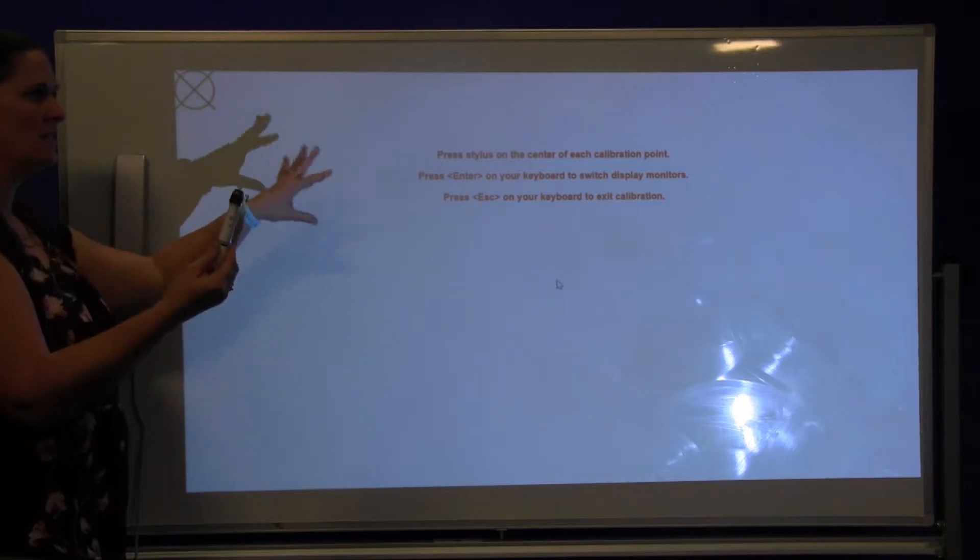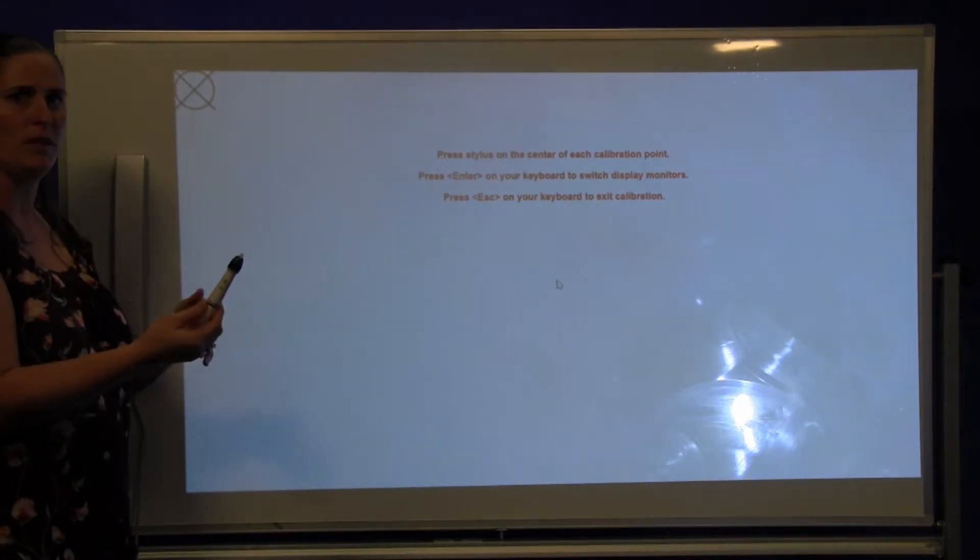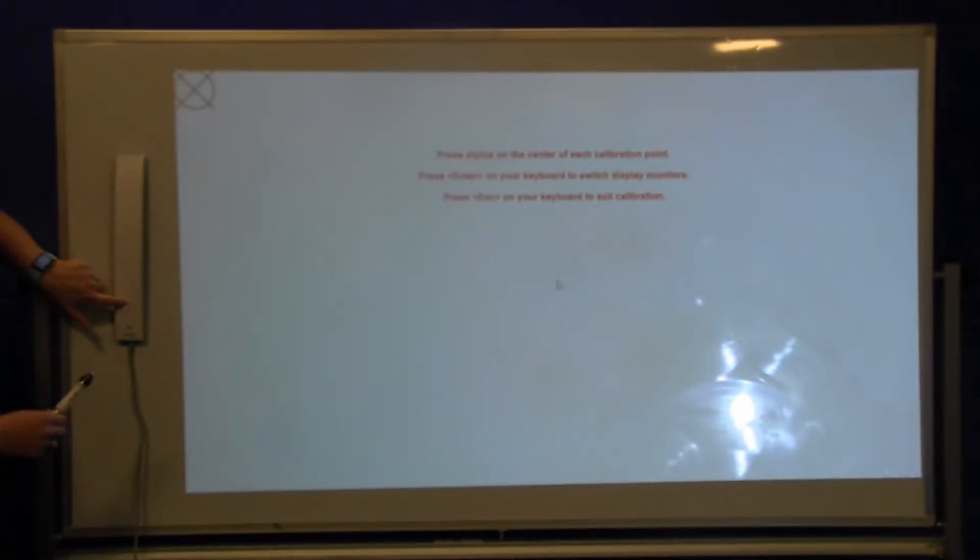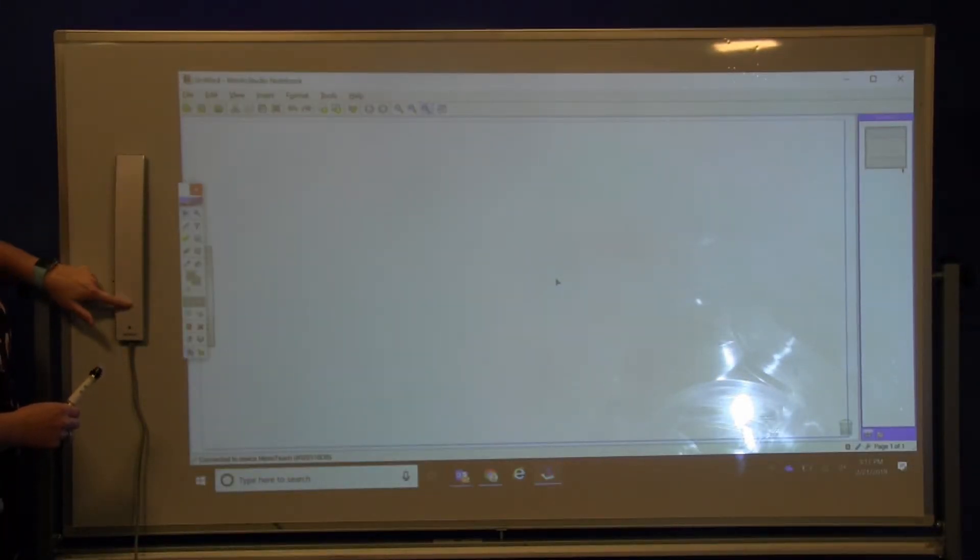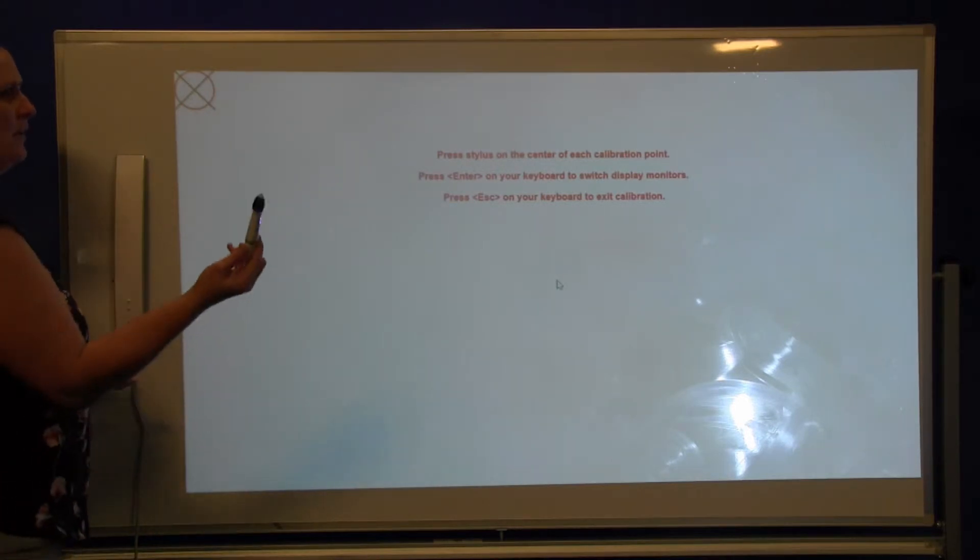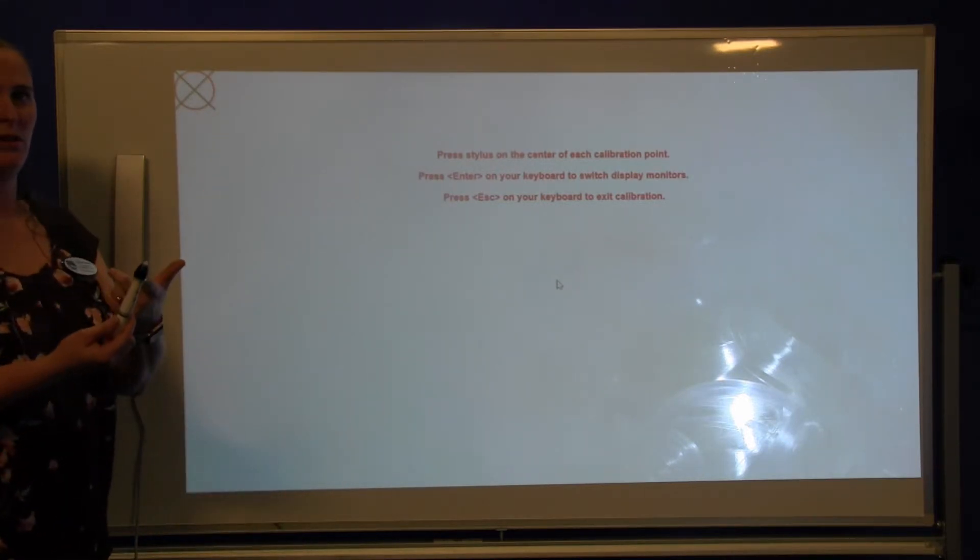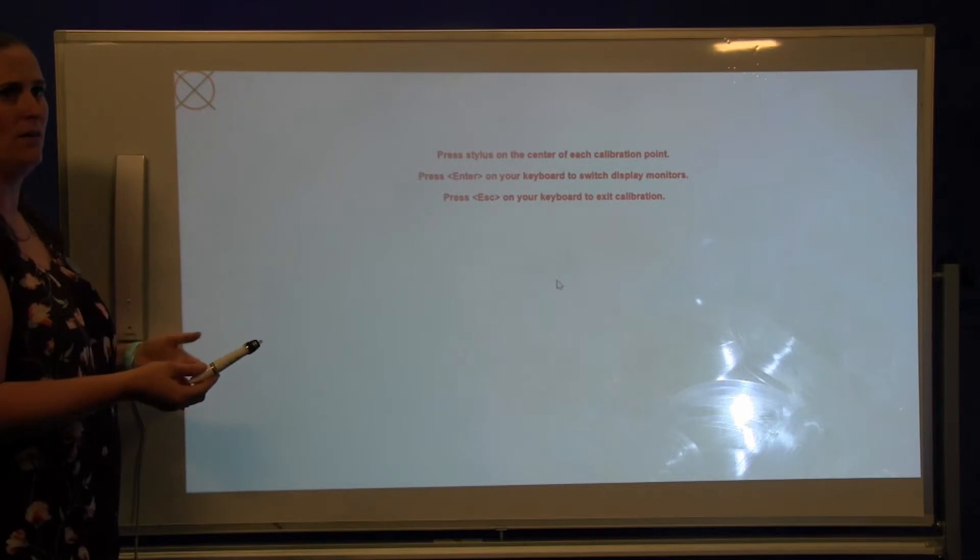Then you're going to take your pen, and if it doesn't already say calibration, there's a couple different ways to start the calibration. You can either hit the bottom button, you can hit the crosshairs button on the Mimeo bar, and it's going to bring it back up for you. Then you're just going to follow the directions on the screen. You're going to tap the stylus to the center of each of the crosshairs.